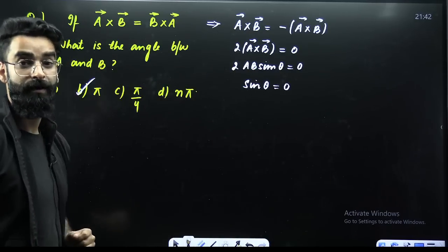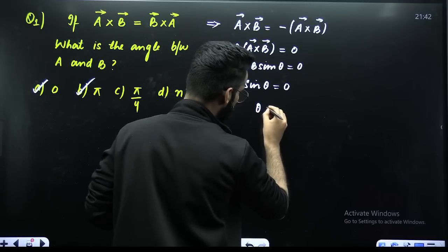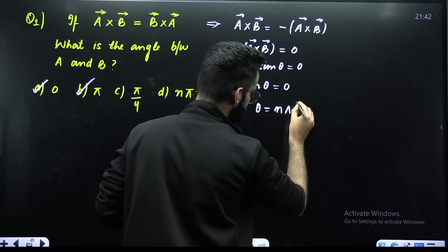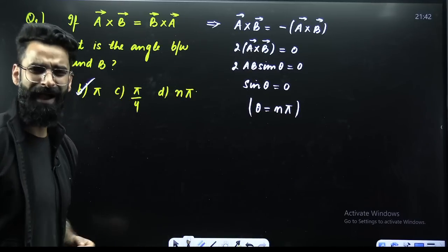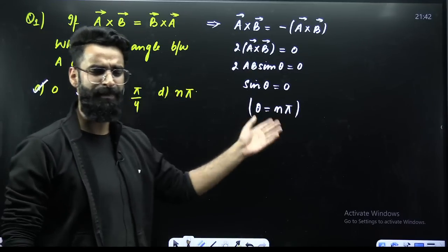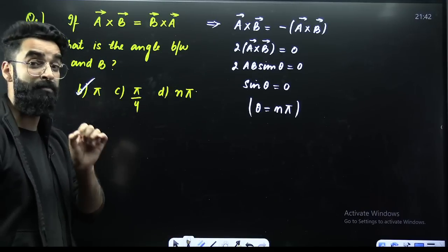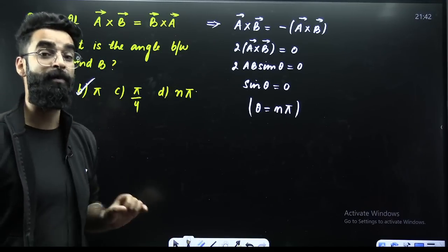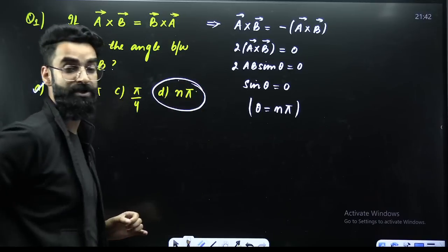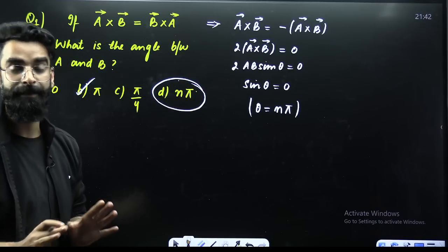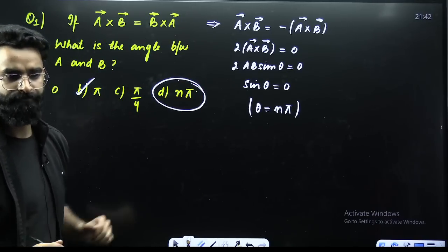Now you tell me, when is sine theta 0? Sine theta is 0 when theta is equal to nπ — theta can be 0, Pi, 2Pi, 3Pi; in general, nπ. So I had told you to select the most appropriate answer, and the most appropriate answer of this particular question is going to be nπ. I hope I am clear with this particular one.